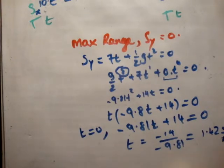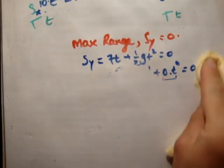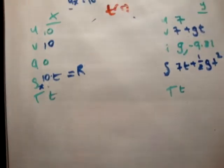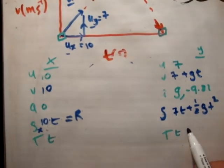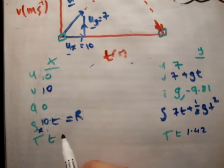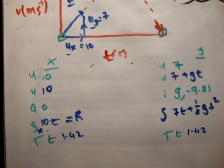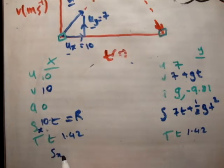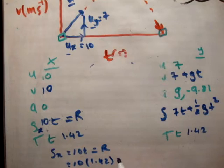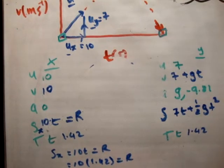So at 1.42 seconds after it started flying in the air, it's after hitting the ground. So we need to find the range. So we need to find S sub x at t equals 1.42. S sub x is equal to 10t equals r, equals 10 times 1.42. So r is equal to 14.2 meters.